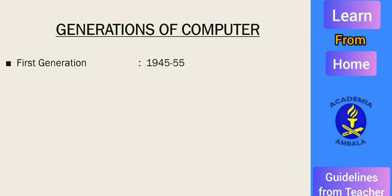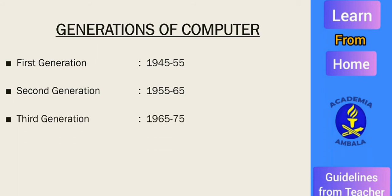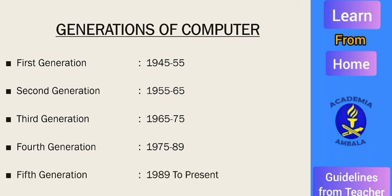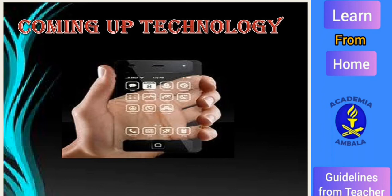First generation computers were developed between 1945 to 1955. Second generation computers were developed between 1955 to 1965. Third generation computers were developed between 1965 to 1975. Fourth generation computers were developed between 1975 to 1989. Fifth generation computers were developed between 1989 till present, and describe the coming up technology.